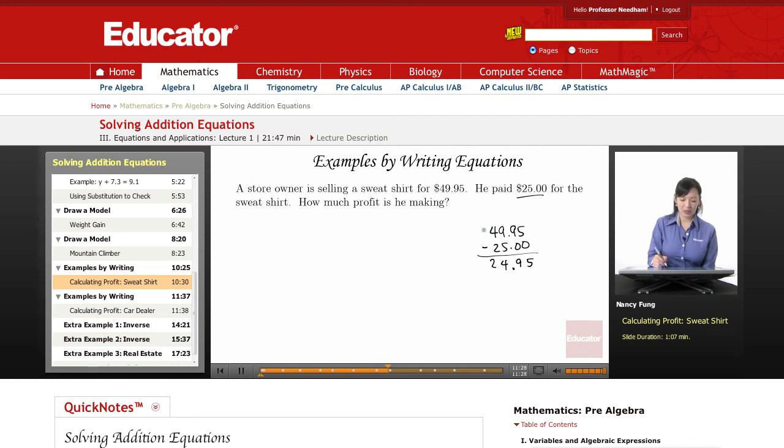9 minus 5 is 4, and 4 minus 2 is 2. So he's going to be making $24.95. So he's almost doubled the price of the sweatshirt here. He paid $25, and he's going to be making an extra $24.95 on the sweatshirt. Let's go back and check the problem, make sure we've answered it correctly. How much profit is he making? Okay, let's include our unit. He's making $24.95.